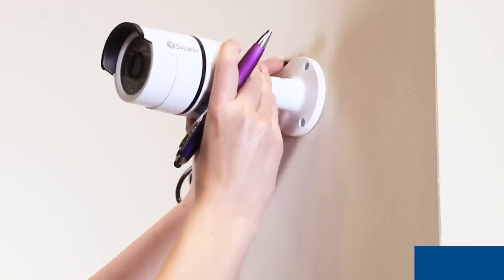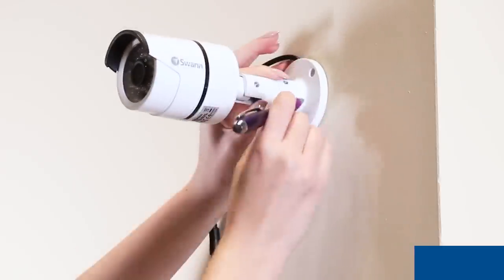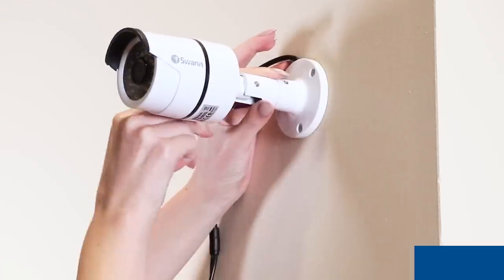Begin by holding the camera in place where you want to install it. Then use the mounting base as a template to mark holes in the wall.